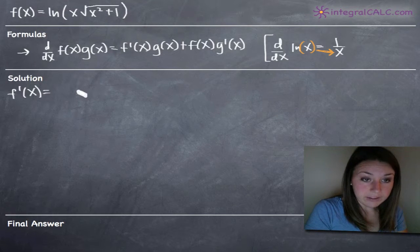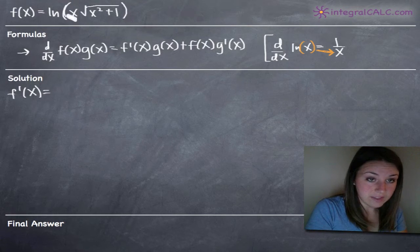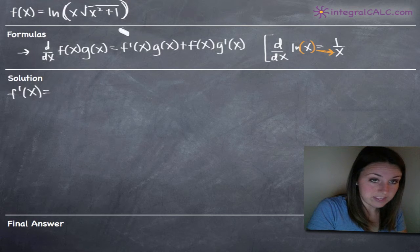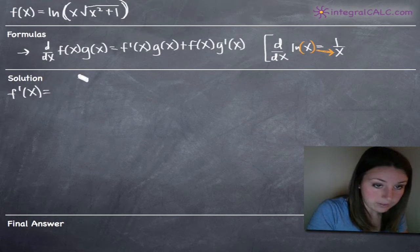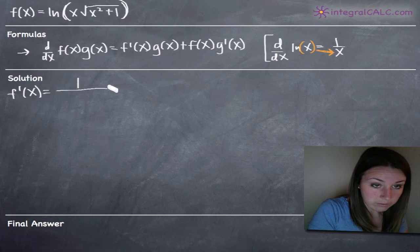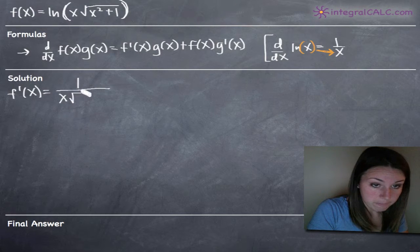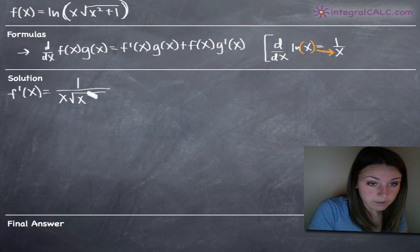In our case, we're going to take everything inside the natural log function — which is everything inside these brackets — and put it in our denominator: 1 divided by the square root of x squared plus 1.